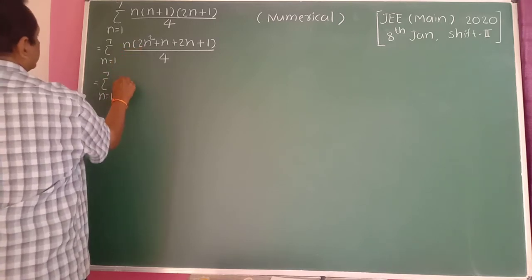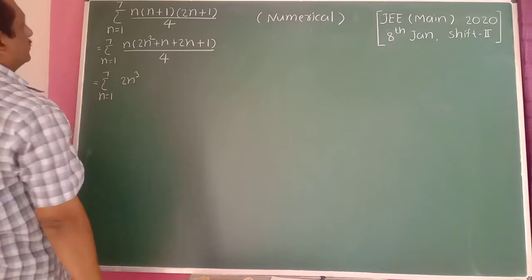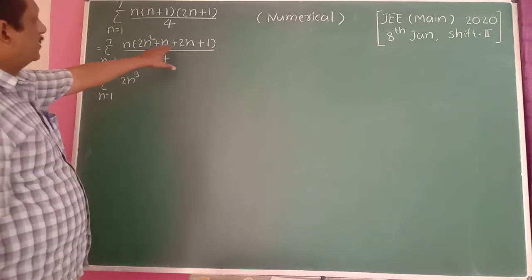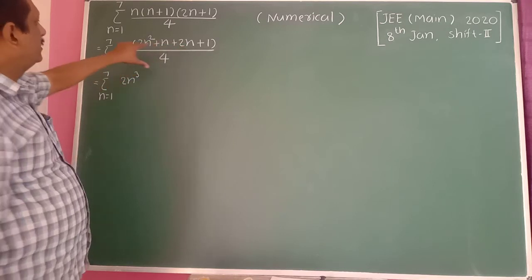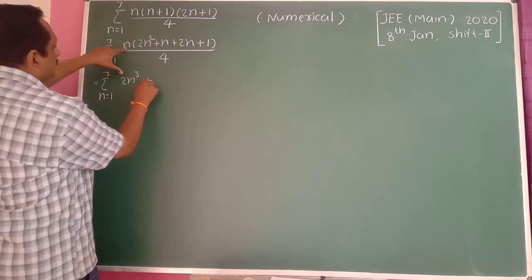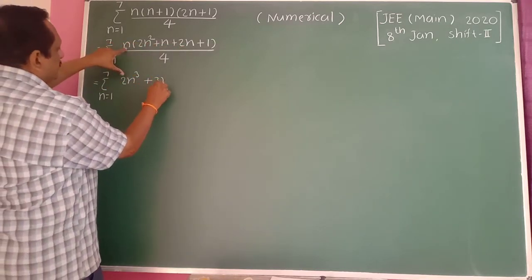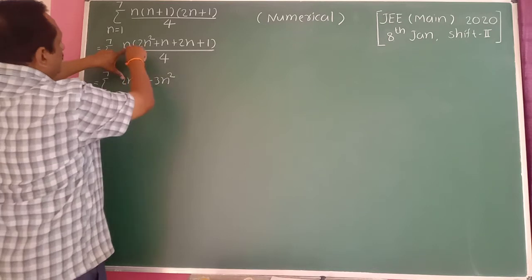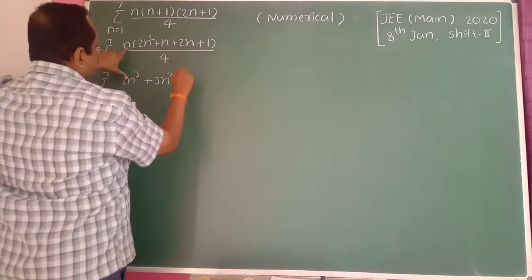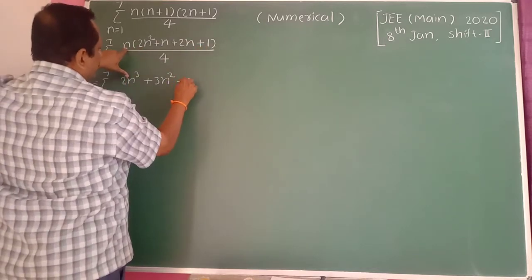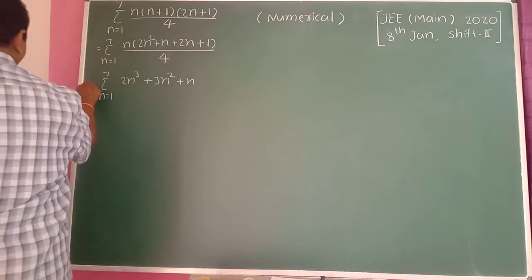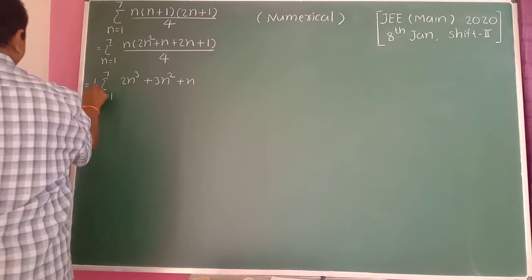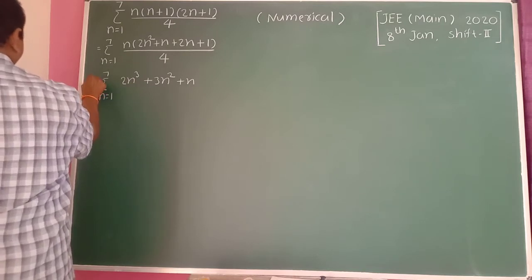Then the expression becomes summation from n equal to 1 to 7 of: 2n cubed plus 3n squared plus n, all divided by 4. The constant 1/4 is taken outside, and the terms inside the bracket are 2n cubed, plus 3n squared, plus n.